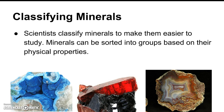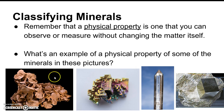Look at number 7 on your video homework and explain why scientists classify minerals. Remember that a physical property is one that you can observe or measure without changing the matter itself — like the texture, smell, or color of something. Record that on number 8 on your video homework. What's an example of a physical property of some of the minerals in these pictures? These are all naturally occurring minerals.